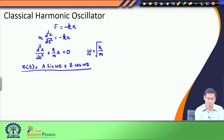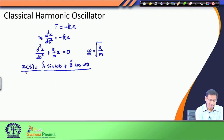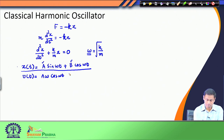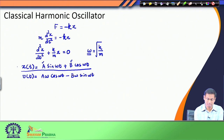What is unknown in this equation is that I have constants a and b whose values I need to determine. Since I know the general solution for x, I can also write the general solution for the velocity — the first time derivative of x — which comes out to be a·ω·cos(ωt) minus b·ω·sin(ωt). So I now have these two general expressions for position and speed.